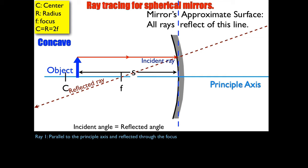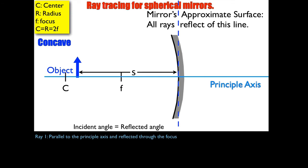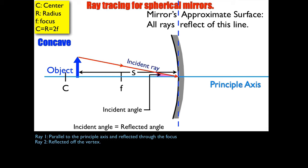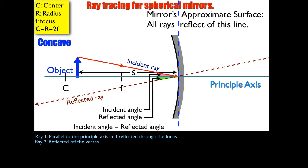So that's the first ray: parallel to the principal axis and reflected through the focus. The second ray is going to be reflected off the vertex using the law of reflection, which says the incident angle is equal to the reflected angle. I draw a line from the object's tip to the vertex of the mirror — right where the principal axis meets the mirror — and the reflection leaves at the same angle on the other side.